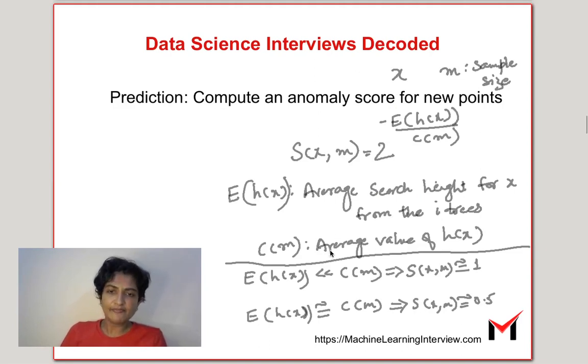And if we see that the average depth to find this particular point is same as the average depth for finding any point in this forest, then basically this is like 2 power minus 1 because both the numerator and denominator are almost the same, which is like close to half. This means it's a regular point, it's not an anomalous point. If it's close to 1 it means it's an anomalous point. And if it's close to 0.5 it means it's a regular point.